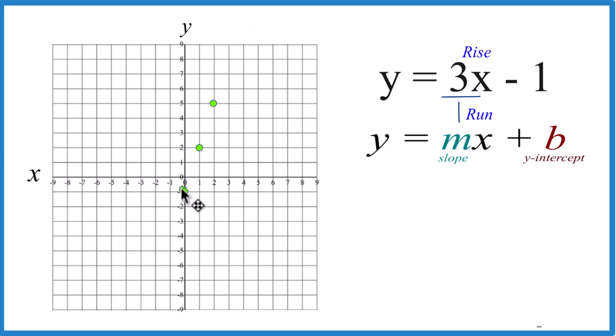You can even go down 1, 2, 3, and then to the left. That would give you another point as well. 1, 2, 3, and there you go.